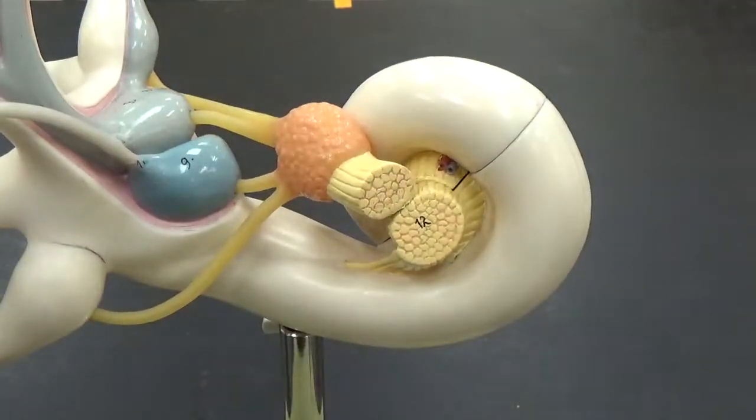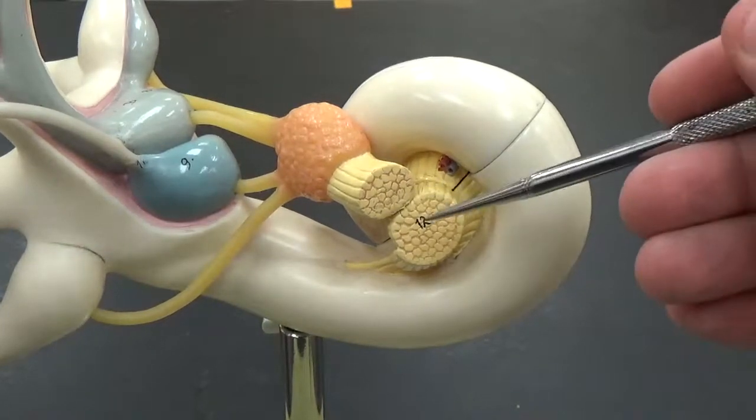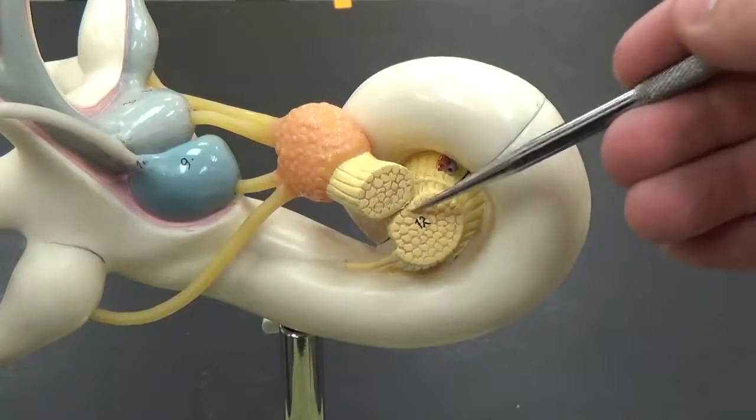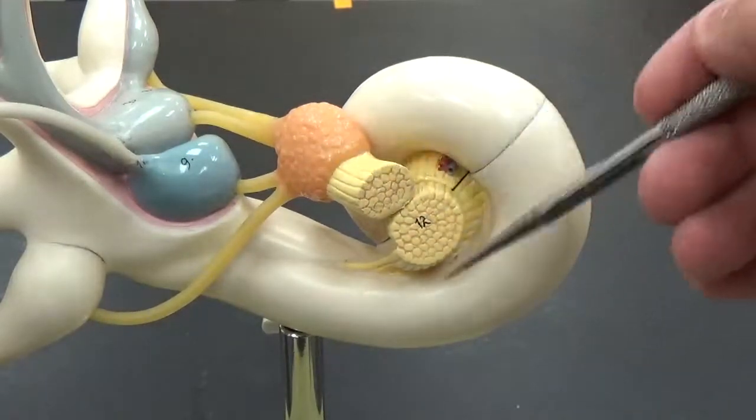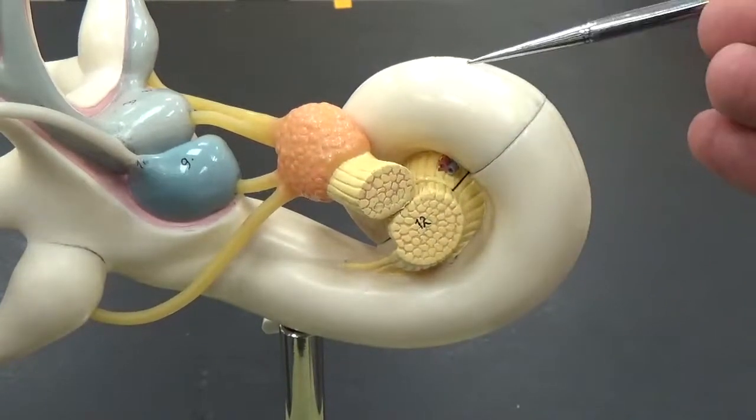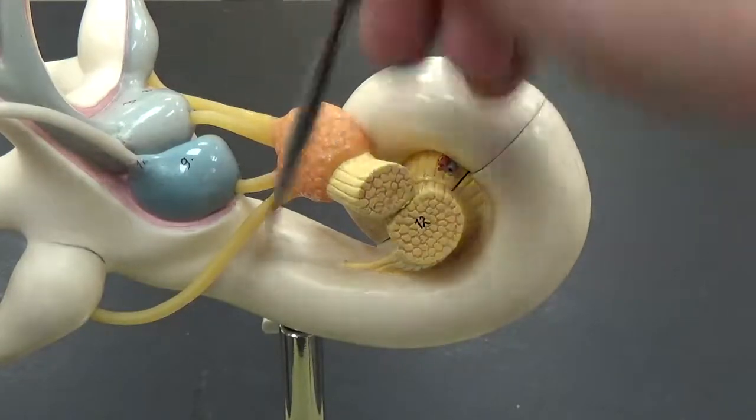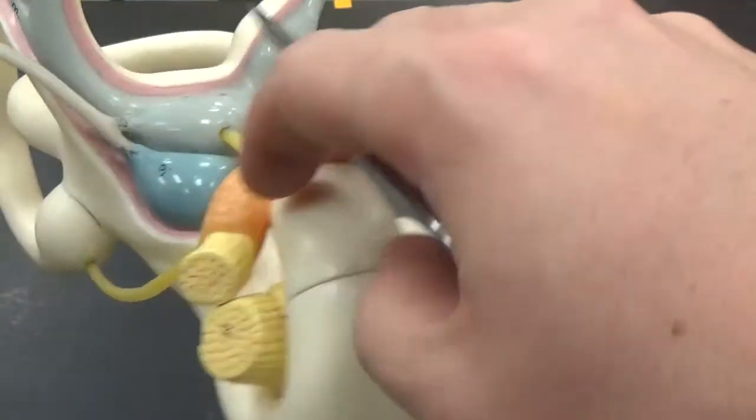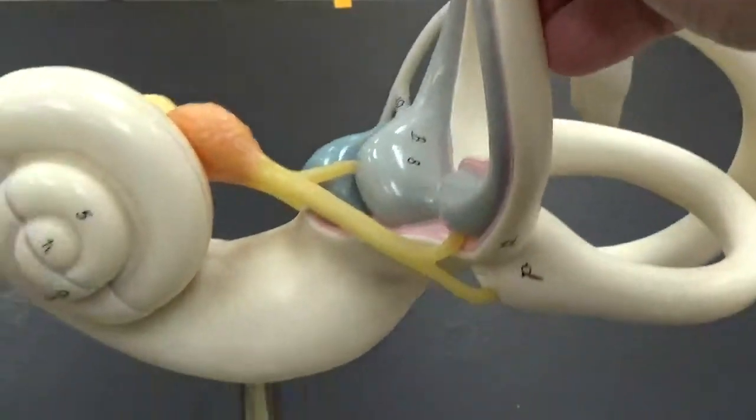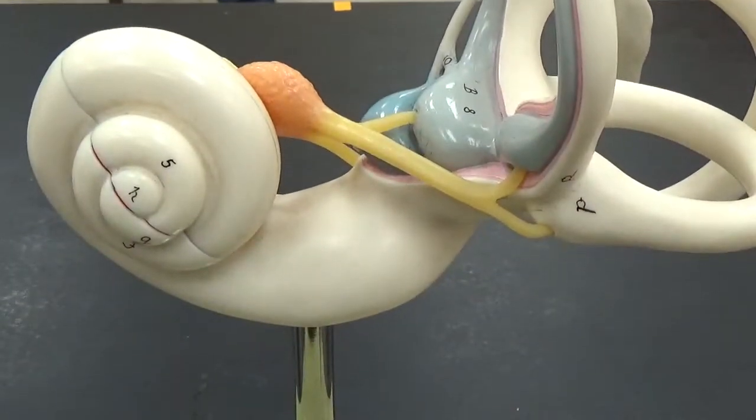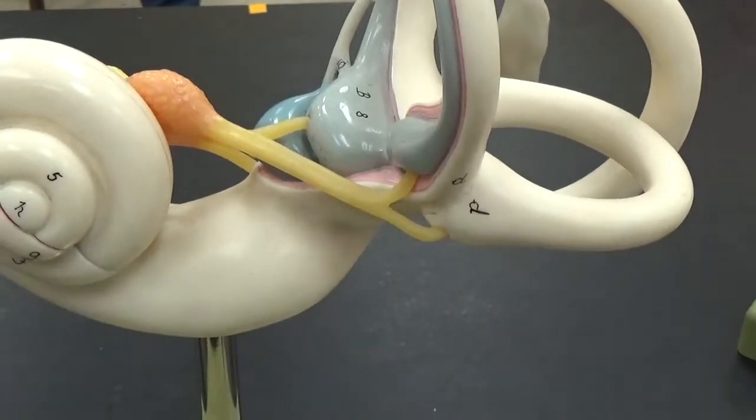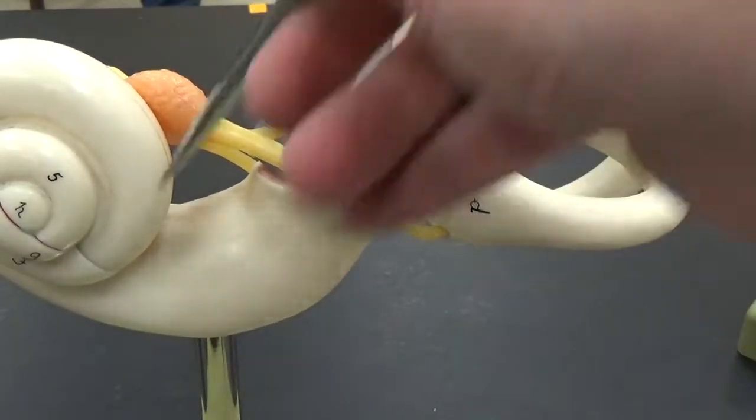On the other side, we have that vestibulocochlear nerve. You have two branches of the vestibulocochlear nerve, the cochlear branch and the vestibular branch. The cochlear branch goes to the cochlea, the vestibular branch goes to the vestibule. Our bony labyrinth is the surrounding layer here of all these bones that surround it.